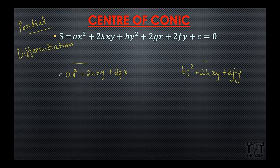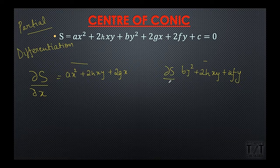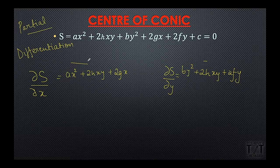We're gonna partially differentiate this equation — the partial differentiation sign is represented by ∂ — differentiating the equation of conic with respect to x and with respect to y. For partial differentiation with respect to x, we take only the x terms and treat every other term as constant, including any other variable present.